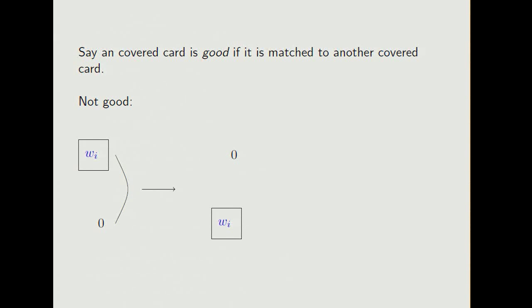Now say that a covered card is good if it's matched to another covered card. So this situation is not good because we have a covered card that's matched with a 0. So we know, based on what the 0 does, we know what the covered card does. So it doesn't change the value of WI.